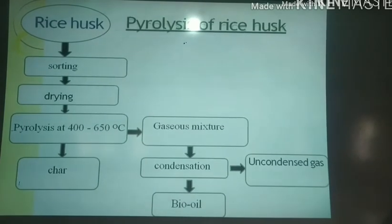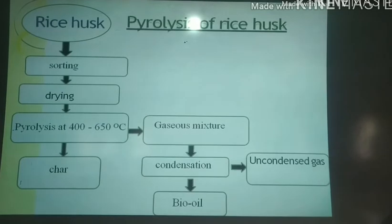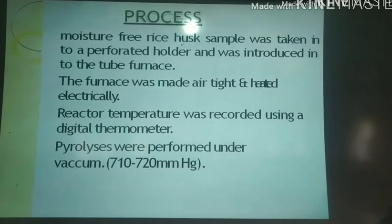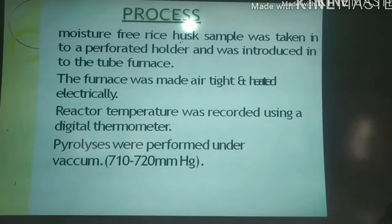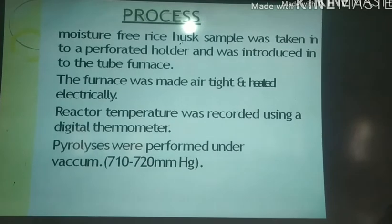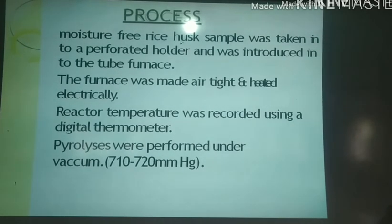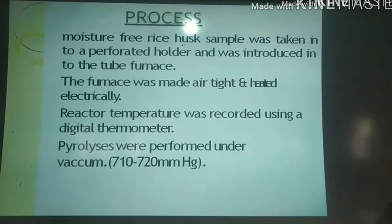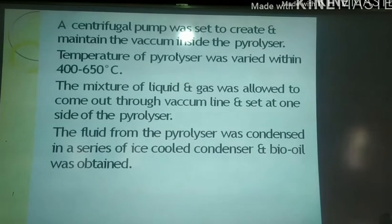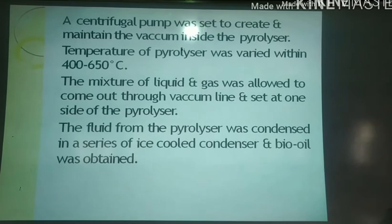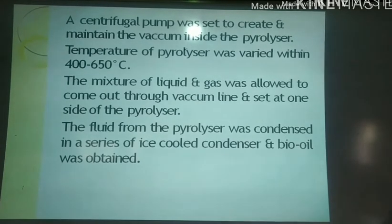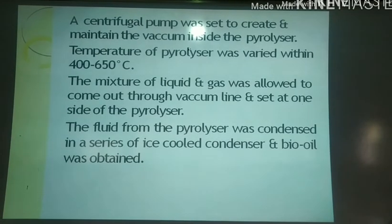This flowchart shows the process of pyrolysis of rice husk. A moisture-free rice husk sample was taken into two perforated holders and introduced into the tube furnace. The furnace was made airtight and heated electrically. Reactor temperature was recorded using a digital thermometer. Pyrolysis was performed under vacuum of 17 to 720 mm of mercury. A centrifugal pump was used to create and maintain the vacuum inside the pyrolyzer. Temperature was varied within 400 to 650 degrees Celsius, and the mixture of liquid and gas was allowed to come out through the vacuum line.